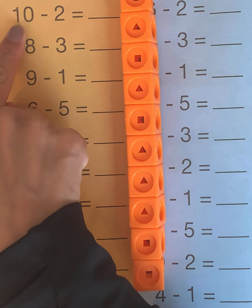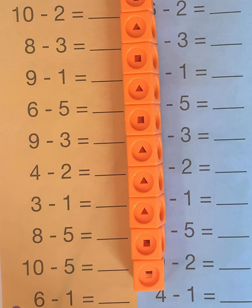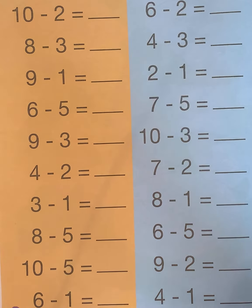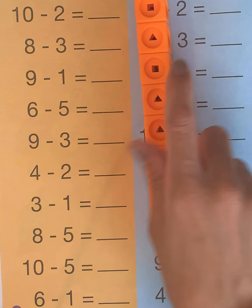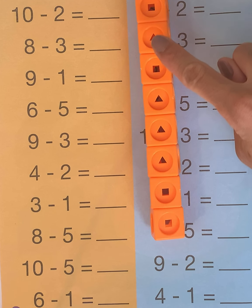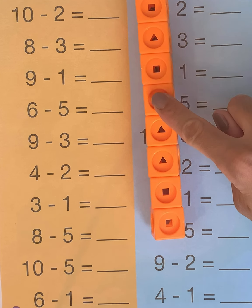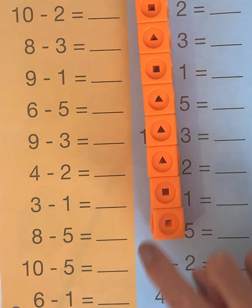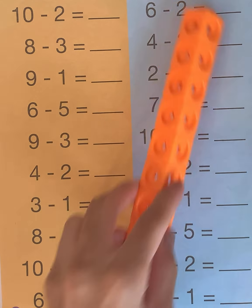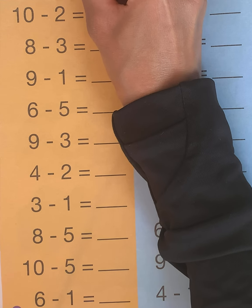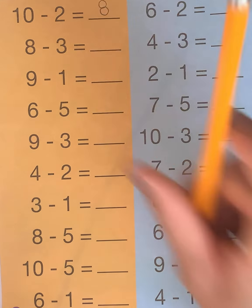We have 10 and we want to take 2 away. 1, 2. Let's see what our answer is: 1, 2, 3, 4, 5, 6, 7, 8. I got 8. Did you get the same number? 8.